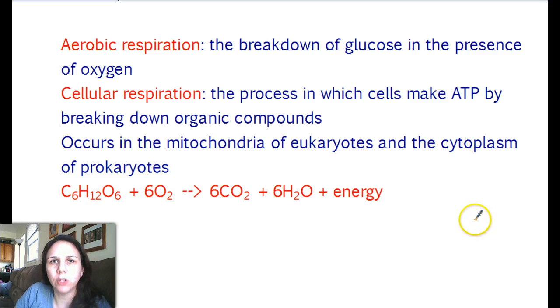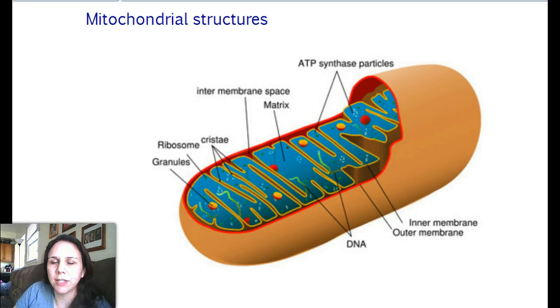Now we said it occurs in a mitochondria, and a mitochondria is kind of like our chloroplast. It's got two layers, an outer and an inner layer, just like that. But instead of stacks of thylakoids, we have stacks of the inner membrane right here.